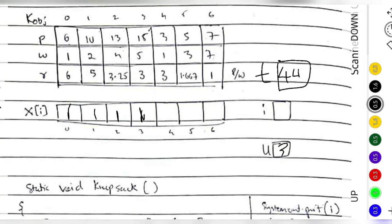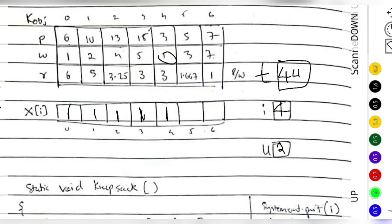i increments to 4. The object has weight 1. Is 1 greater than 3? No, so we include it. u becomes 3 minus 1, which is 2. The profit from this object is 3, so total profit becomes 44 plus 3, which is 47.